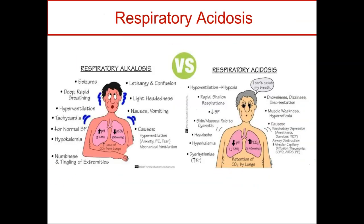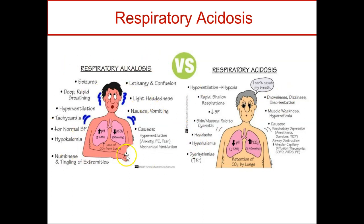Respiratory acidosis is typically due to hypoventilation — respiratory diseases, an obstructive airway, or an overdose. When heading into acidosis, we worry about coma setting in, effects on the brain, and headaches. When in alkalosis, it's more likely hyperventilation, anxiety, possibly a pulmonary embolism, or a ventilator not set properly, causing this excess hyperventilation to occur.